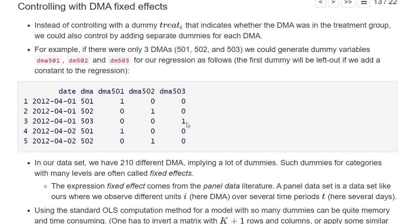In our actual data set, we have 210 different DMAs, so this implies a lot of dummy variables—210 dummy variables, maybe one will be dropped and it's 209, but it doesn't really make a big difference. Such dummy variables for categories with many levels are often called fixed effects.